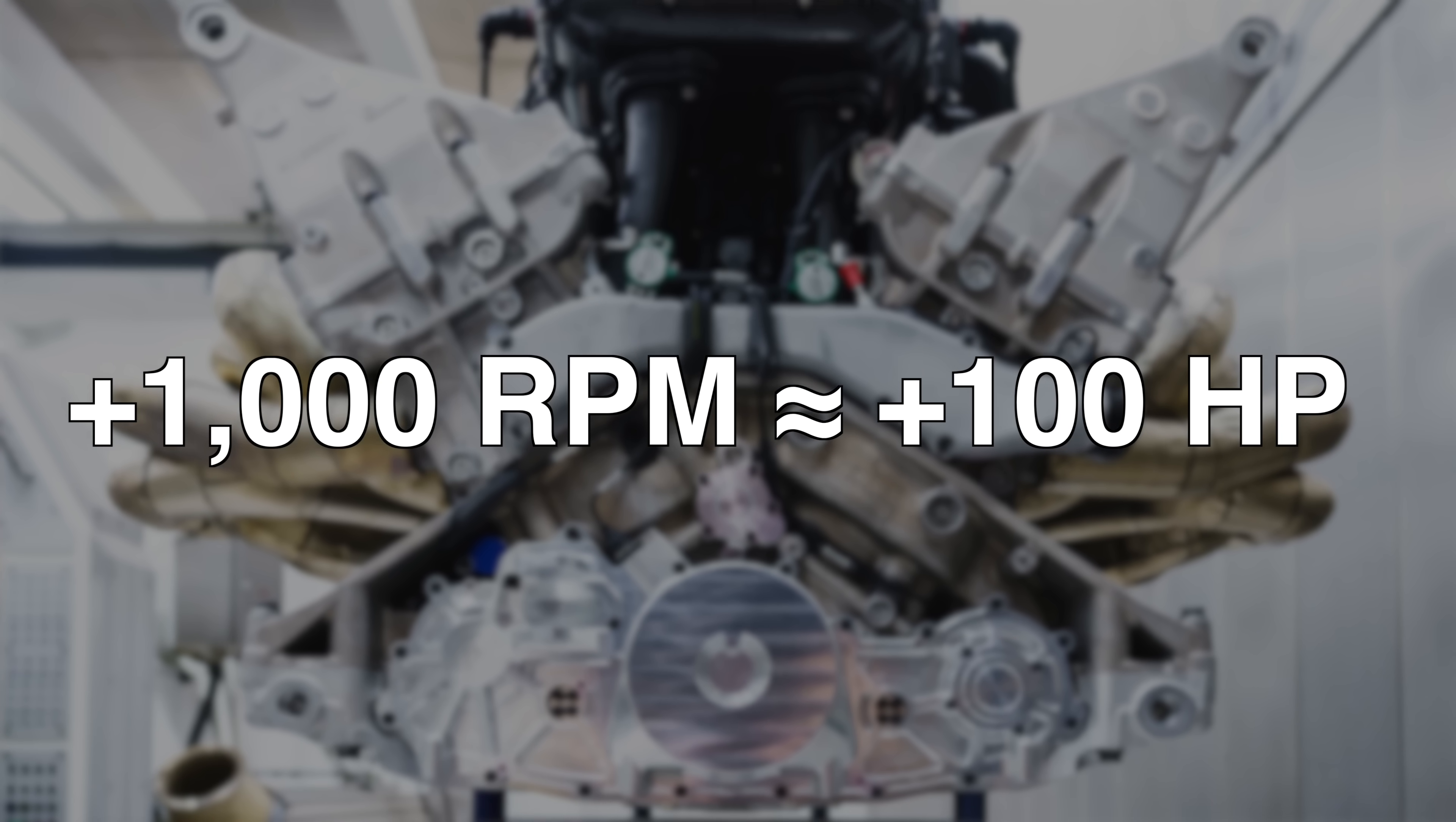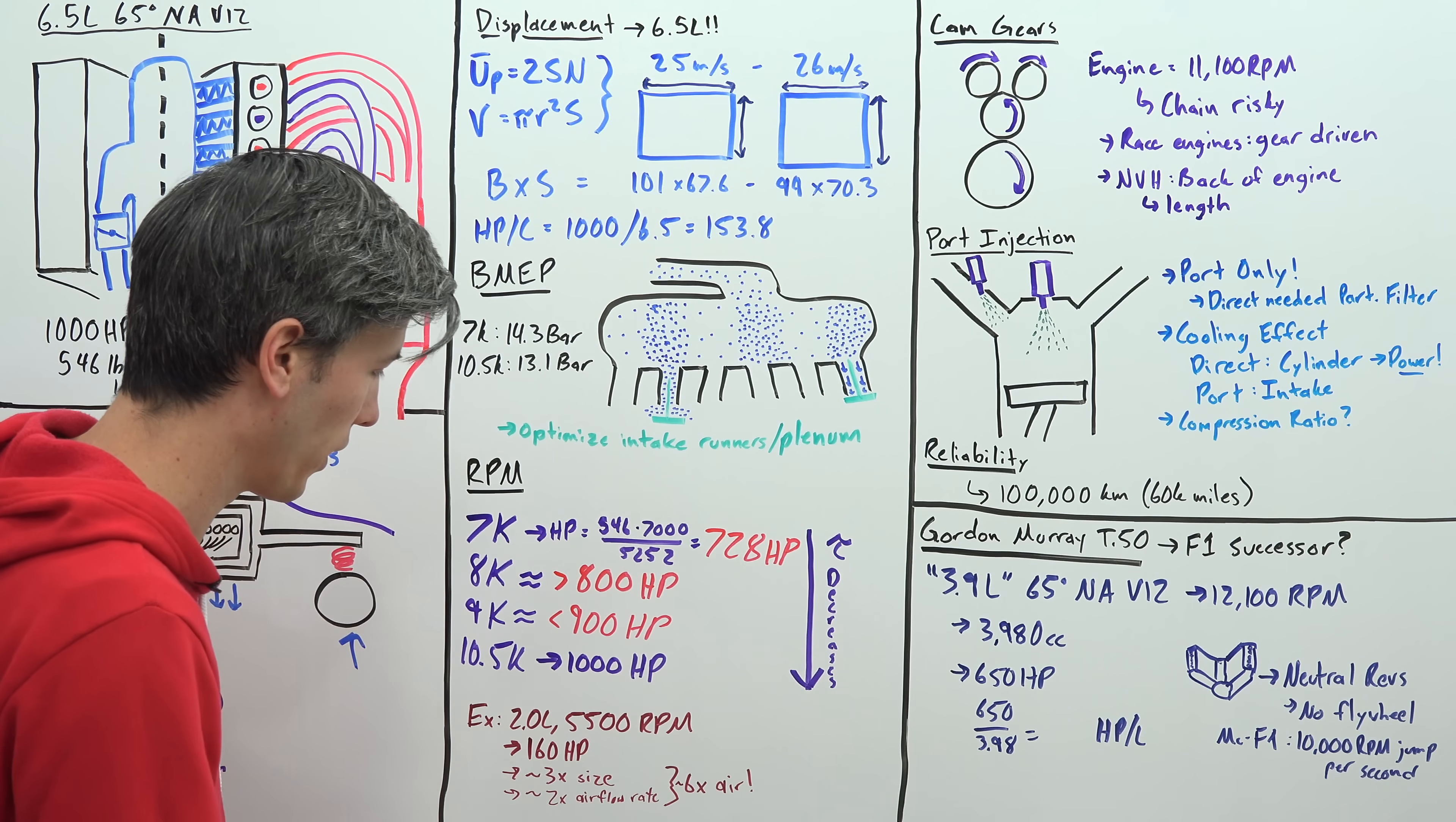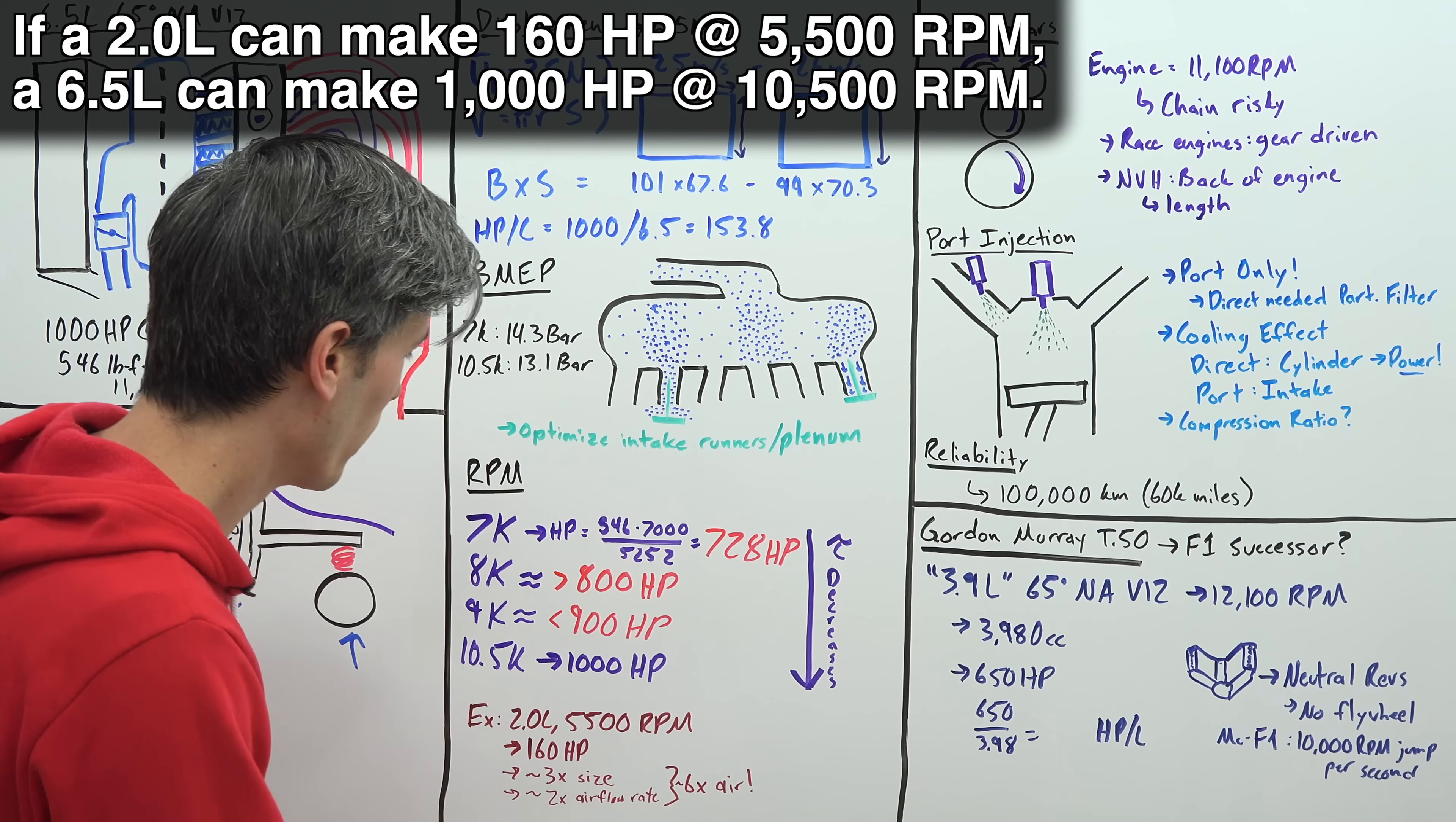So by the time it gets to 10,500 rpm it is capable of producing a thousand horsepower. And you know this sounds crazy because the number is higher than other vehicles that we see but if you were to think about a two liter engine revving to 5,500 rpm making 160 horsepower it wouldn't sound all that crazy. And this is actually representative of what this is, all we're doing is nearly tripling the size of the engine and then doubling the rpm, thus doubling the airflow and then because it's three times the size this is over you know six times the airflow.